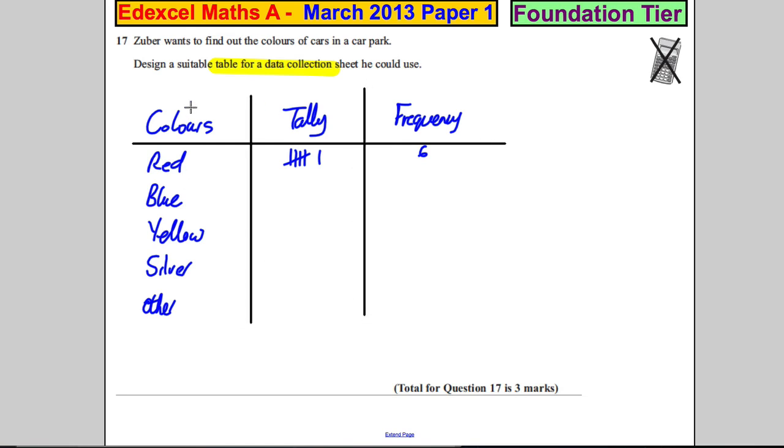To get the marks, you have to have colours and you have to have at least three. You have to have a tally or a way of marking them off, and you have to have a total or frequency column where you actually write the number down. That's how you get the three marks and we're done.